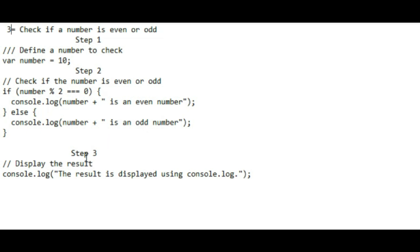In step 3, we use console.log to display the result in the console. The output will be based on whether the number is even or odd. For example, if the number is 10, it will output that 10 is an even number. You can replace the number variable with any integer you want to check and the code will provide the result.